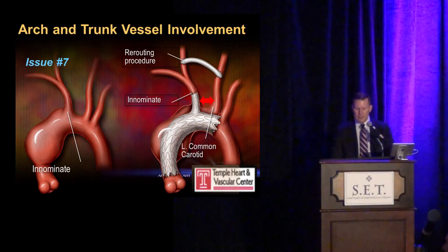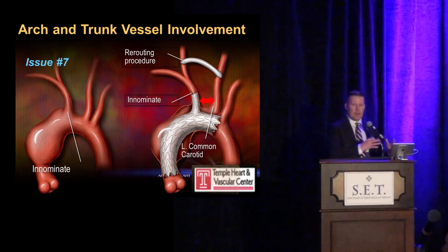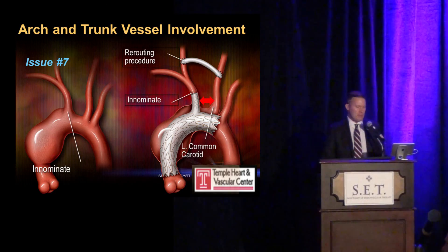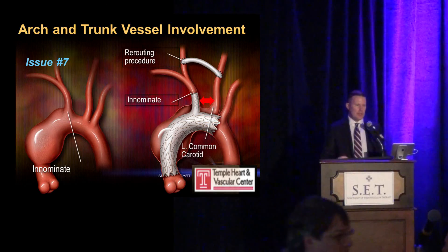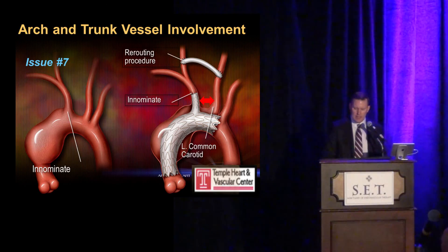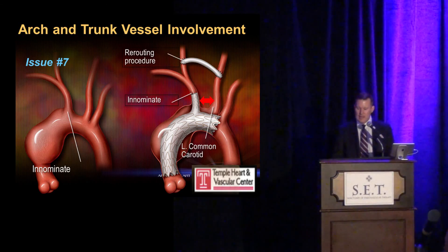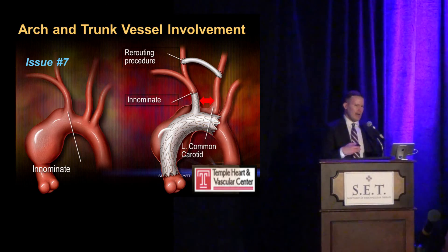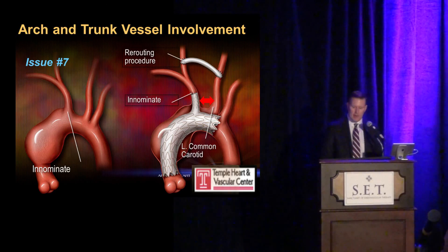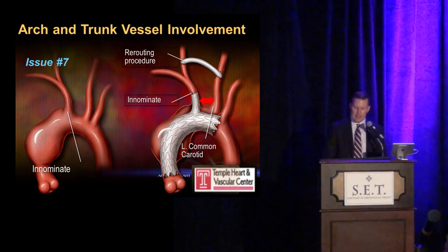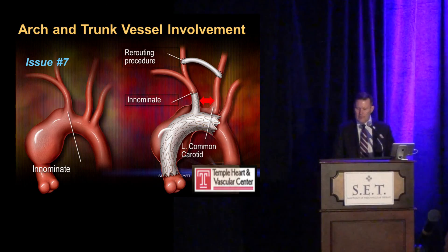The next issue is what happens when disease is not limited to the ascending aorta but involves the proximal or mid-arch. That changes the distal landing zone, and we will need branch stent grafts. However, all manufacturers currently design branch grafts off the proximal end of the graft for coming up from below around the aortic arch. For ascending aortic approaches, we'd need a whole different set of device designs to accommodate branches off the back end of the devices.